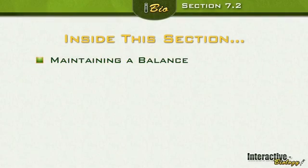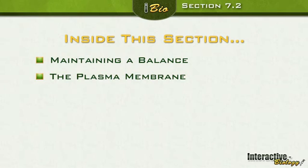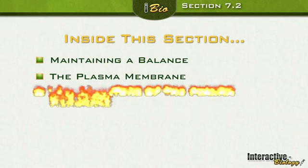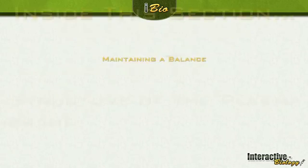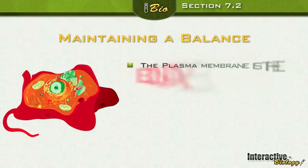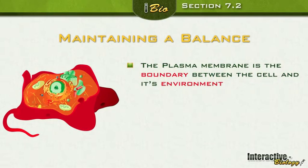Inside this section, first we're going to talk about maintaining a balance. That's very important when we're talking about the plasma membrane. Then we're going to talk about what the plasma membrane is and its structure. The plasma membrane is a boundary between the cell and its environment. If we didn't have a plasma membrane, there would be no overall structure, and the stuff inside would not be separated from the stuff outside.